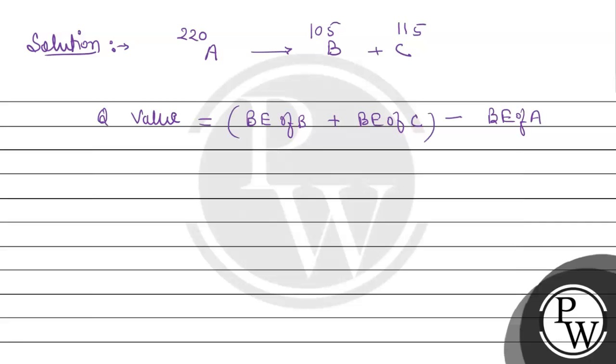Now we calculate the binding energy. Per nucleon binding energy is 6.4, so 6.4 times 105 for B. Then C has mass number 115, binding energy 6.4.